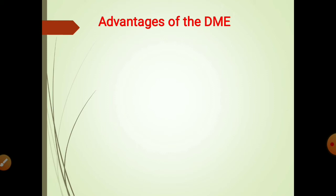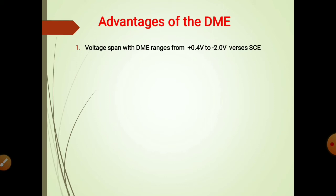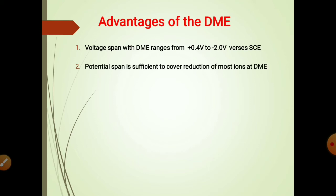Now we will see the advantages of a DME. The useful voltage span with DME ranges from plus 0.4V to minus 2.0V against SCE, that is the saturated calomel electrode. At potentials more positive than 0.4V, the mercury starts dissolving, while at potentials more negative than minus 2.0V, the evolution of hydrogen on the mercury cathode may occur. This potential span is sufficient to cover the reduction of most metal ions at DME.